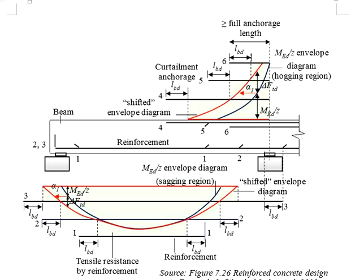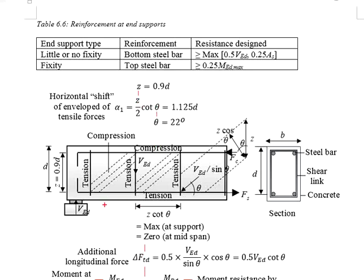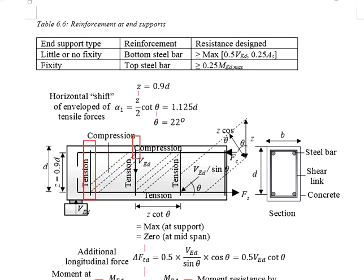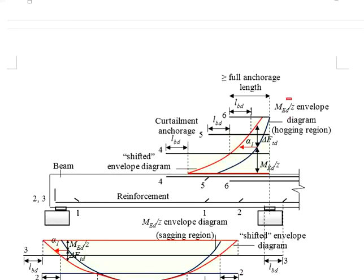However, the z used to calculate alpha 1 is obtained from the strut-and-tie model of the shear link in the beam section. This model assumes a beam consists of an analogical truss where there are regions of tension and compression, with the diagonal strut taking compression via the concrete and the vertical shear link taking the tension. The z here is assumed to be the distance between the two reinforcement layers, equal to 0.9 times the effective depth. You must be careful not to confuse this z with the z used to get the MEd per z envelope diagram.